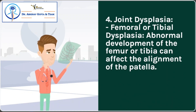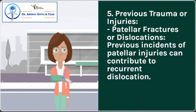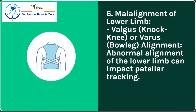4. Joint Dysplasia: Femoral or tibial dysplasia – abnormal development of the femur or tibia can affect the alignment of the patella. 5. Previous Trauma or Injuries: Patellar fractures or dislocations – previous incidences of patellar injuries can contribute to recurrent dislocation. 6. Malalignment of Lower Limb: Valgus (knock knee) or varus (bowleg) alignment – abnormal alignment of the lower limb can impact patellar tracking.